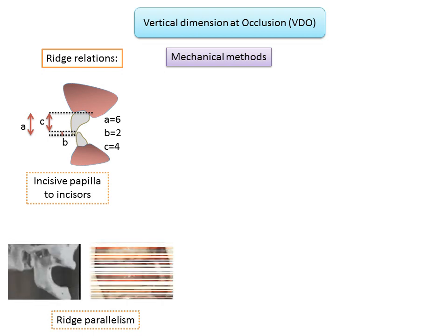Another mechanical method is ridge parallelism. The mandible is parallel to the maxilla only at occlusion. This factor can be used to determine the vertical dimension at occlusion — the mandible is adjusted to be parallel to the maxilla, associated with a 5-degree opening of the jaw, so that the TMJ receives a correct amount of jaw separation.